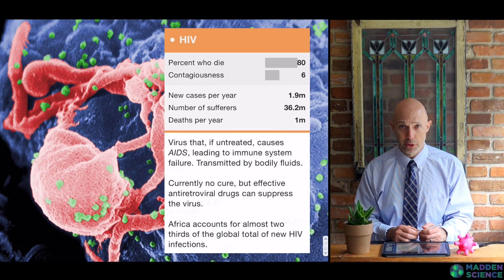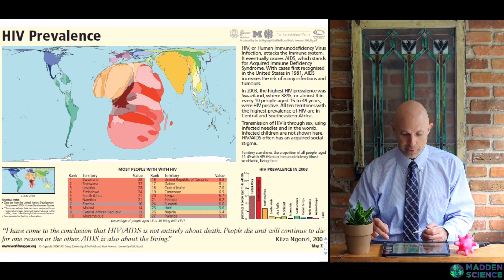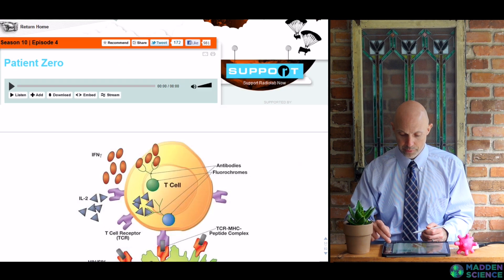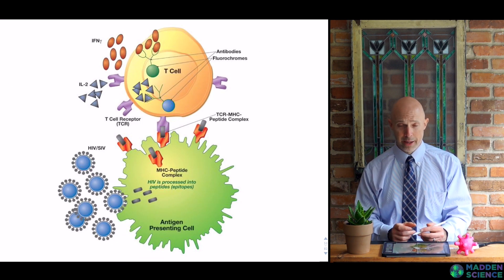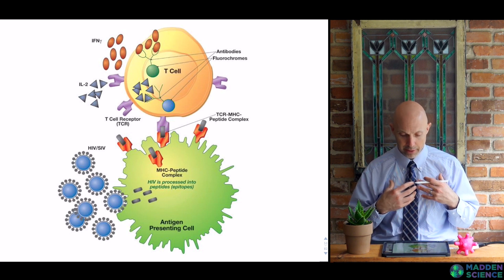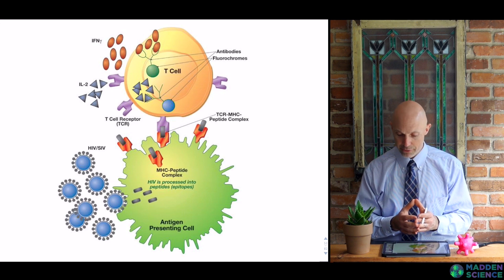Let's look at HIV — Human Immunodeficiency Virus. You can see the percent who die if left untreated leads to AIDS. Here's a map for prevalence — again, Africa, India. Really cool Radiolab podcast on patient zero. Here's a close-up look at the way in which HIV impacts our immune system through antigen-presenting cells and T cells.